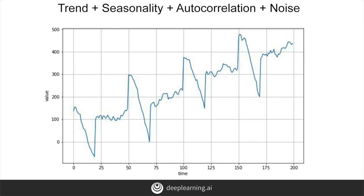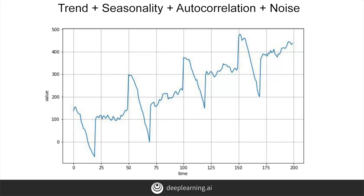Time series you'll encounter in real life probably have a bit of each of these features: trend, seasonality, auto-correlation, and noise. And as we've learned, a machine learning model is designed to spot patterns. And when we spot patterns, we can make predictions.